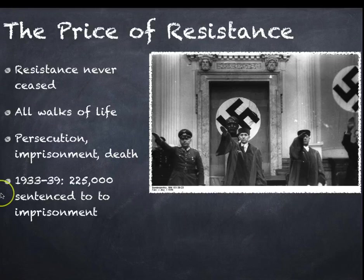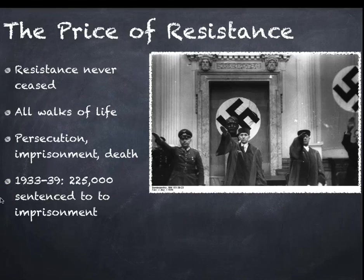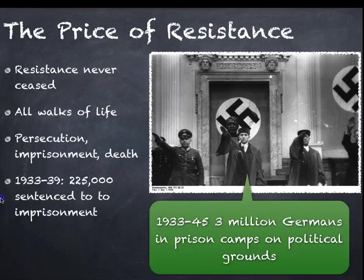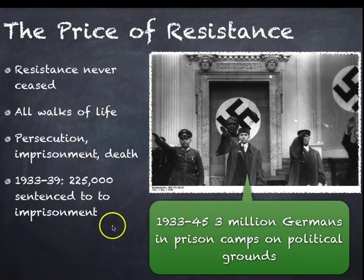From 1933 to 1939, 225,000 people were sentenced to imprisonment. It wouldn't necessarily be automatic death for minor offences or criticisms — that would simply be impractical. But over the entire period of the Nazi regime, three million Germans were held in prison camps on political grounds.